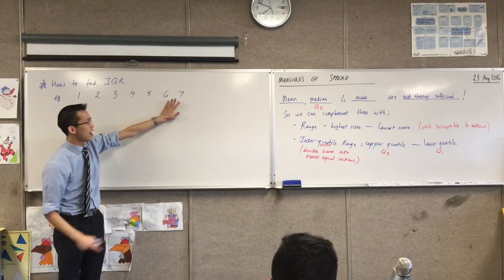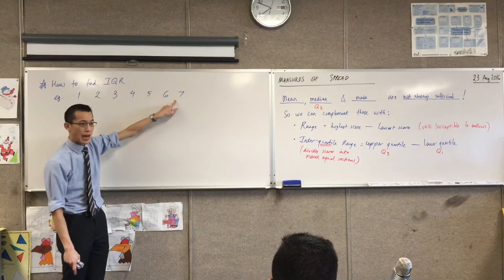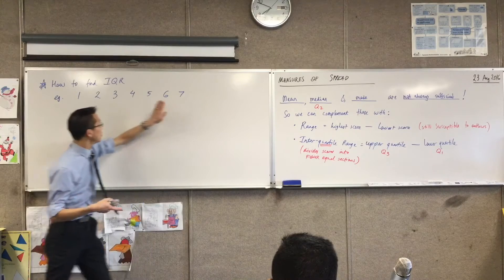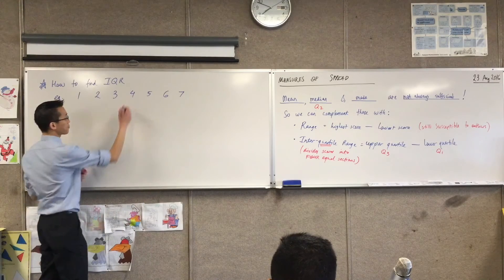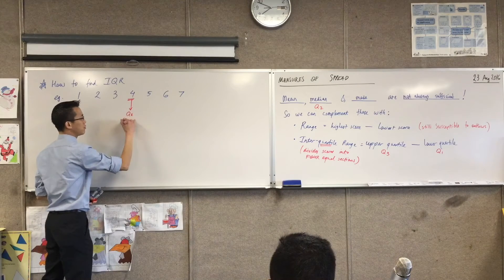Yeah, very good. So I've conveniently named the scores after how many there are. So if N equals 7, I'm going to add one, which gets me to eight. And then I divide by two, which gets me to four. So let's all label this guy in here. We already know that's Q2, the median.